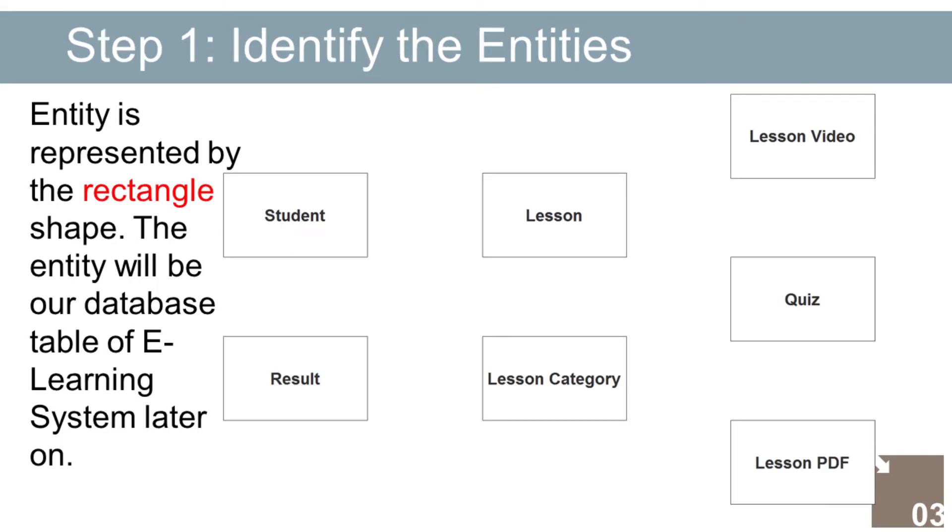Step 1: Identify all entities. Entity is represented by the rectangle shape. The entity will be our database table of e-learning system later on. In the e-learning system we have the following entities: 1. Student, 2. Result, 3. Lesson, 4. Lesson Category, 5. Lesson Video, 6. Quiz, 7. Lesson PDF.